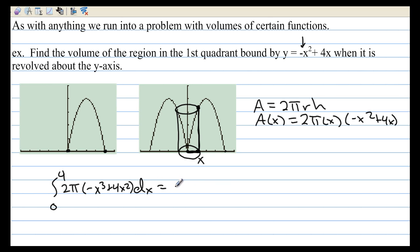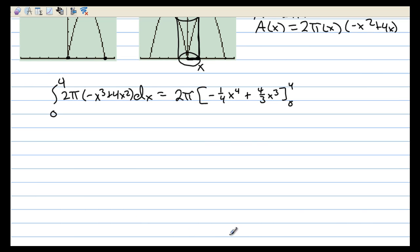I can pull the 2 pi out, integrate what remains, which is negative 1 fourth x to the fourth, and then plus 4 thirds x to the third, integrated from 0 to 4. So I just have to plug 4 into this.